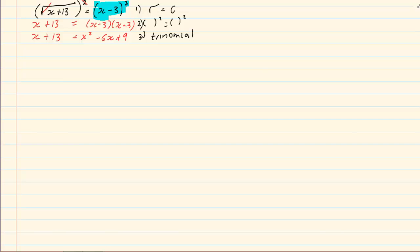Now once we've done that we have a normal trinomial. We have x squared minus 6x plus 9 minus x minus 13 is equal to 0, leaving us with x squared minus 7x minus 4 is equal to 0. So once we've done that we have to look at the trinomial. In this case we're going to use a formula where x is equal to minus b plus minus square root of b squared minus 4ac all over 2a.